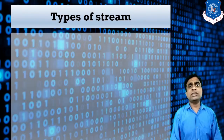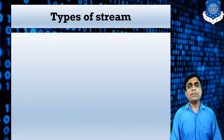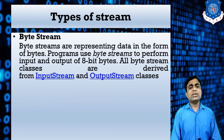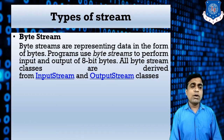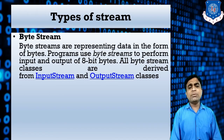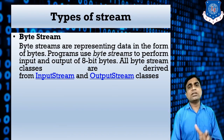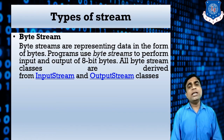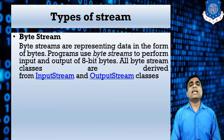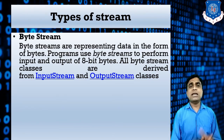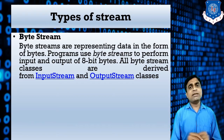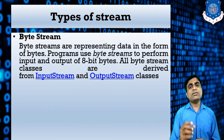There are mainly two types of streams: byte stream and character stream. Byte streams represent data in the form of bytes. That means the program uses a byte stream to perform input and output operations of 8-bit bytes. All byte stream classes are derived from InputStream and OutputStream. One important point is that byte stream supports 8-bit data.